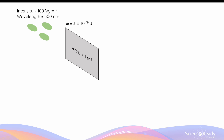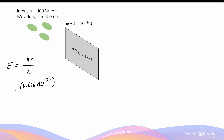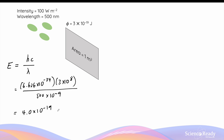Let's say I have green light of wavelength 500 nanometers and intensity of 100 watts per meter squared, and these photons will be incident on a 1 meter squared area of a particular metal with a work function of 3 times 10 to the power of minus 19 joules. Given the wavelength, we can calculate the photon's energy by dividing Planck's constant times the speed of light by the wavelength. Planck's constant is 6.626 times 10 to the minus 34, the speed of light is 3 times 10 to the 8 meters per second, divided by the wavelength in meters. This gives a photon energy of roughly 4.0 times 10 to the minus 19 joules.